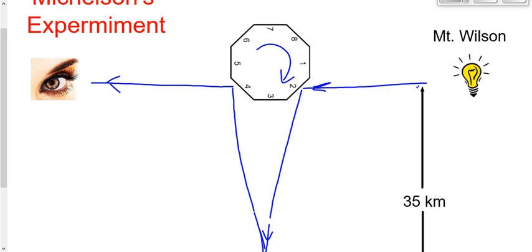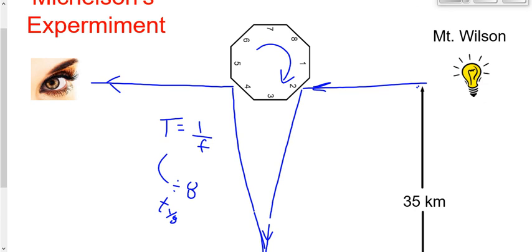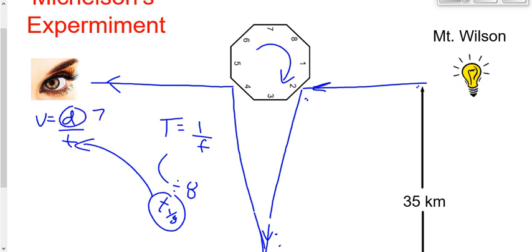That's really important to know, because if we know the frequency of the rotating mirror — how many revolutions per second it's making, and it could be 600, 700, 800 hertz — we can pretty easily calculate the period, the time that it takes for one complete rotation. If we can calculate the period, we divide that by eight to get the time for one eighth of a rotation. And the time for one eighth of a rotation is the time it took the light to travel 70 kilometers — 35 kilometers from Mount Wilson to San Antonio and back. If we know that time and we know the distance of 70,000 meters, then we can calculate the speed of light.